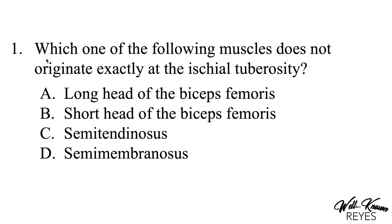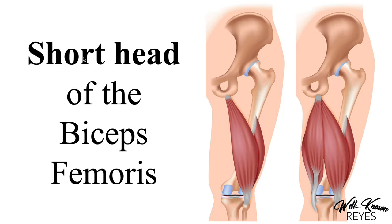Quick check: which of the following muscles does not originate at the ischial tuberosity? A, the long head of the biceps femoris; B, the short head of the biceps femoris; C, semitendinosus; or D, semimembranosus? The answer is B, the short head of the biceps femoris. The long head originates at the ischial tuberosity, but the short head originates at the linea aspera of the posterior femur. Semitendinosus and semimembranosus both originate at the ischial tuberosity.